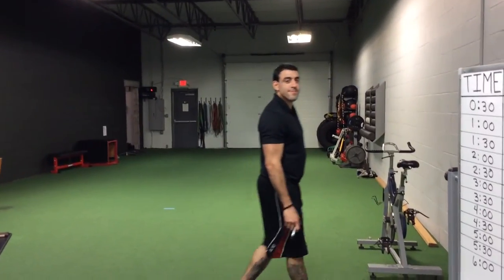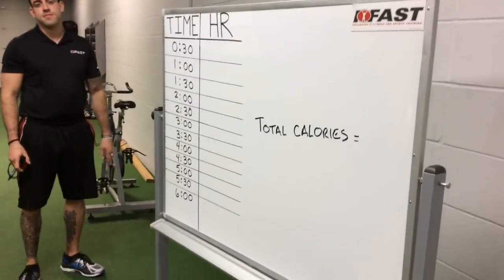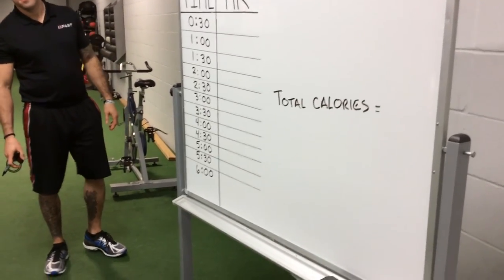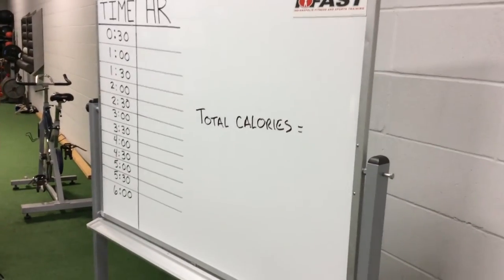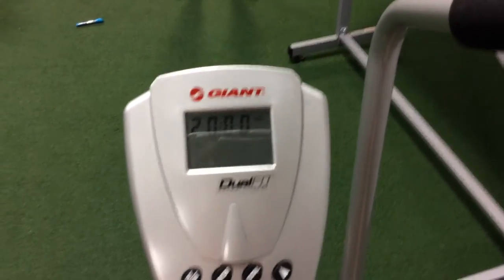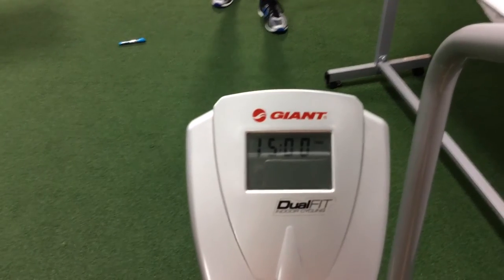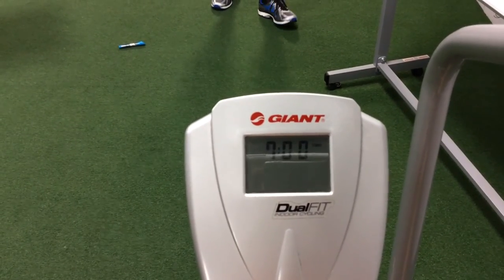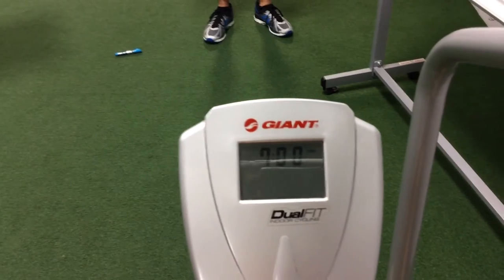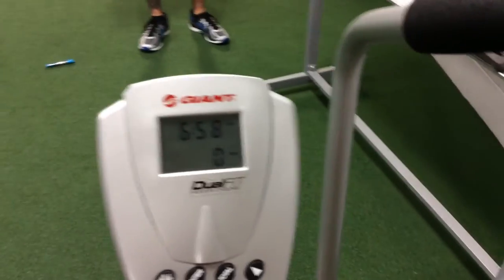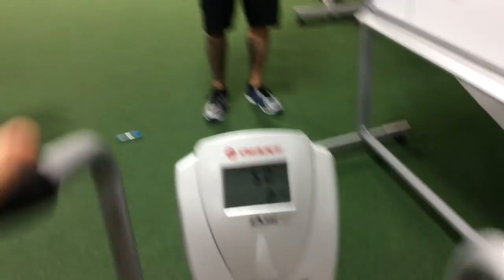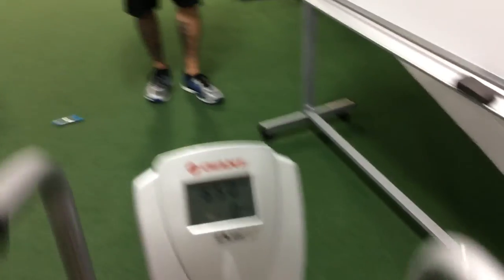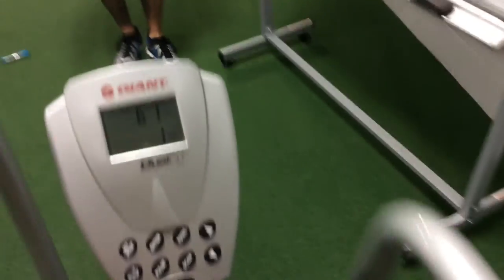Okay guys, I brought Tony in to run my test for me. We've got the whiteboard set up so we're going to measure my heart rate at 30-second intervals and then take an average at the end, and we are going to measure my total calories burned according to this machine. We're going to go for six minutes — I'll dial this to seven and start. I've already done my warm-up; Brandon's going to help film the rest of this.